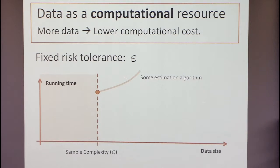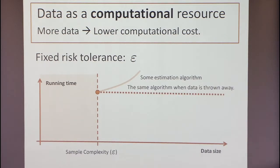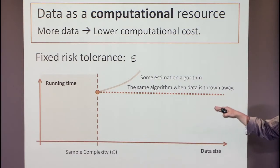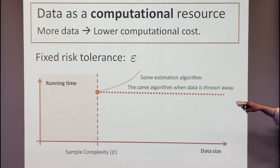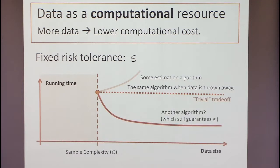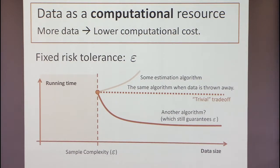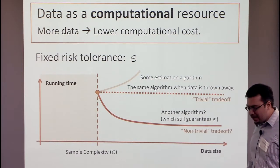What you can do given this algorithm is just take it, truncate your data, and use it as is — that gives you a flat line in terms of the computation-statistics trade-off. But that's somewhat trivial. What we're asking is: once you go beyond the sample complexity, once you have more data than you need, can you leverage that extra data to drive the computational cost down? Does there exist a non-trivial trade-off?